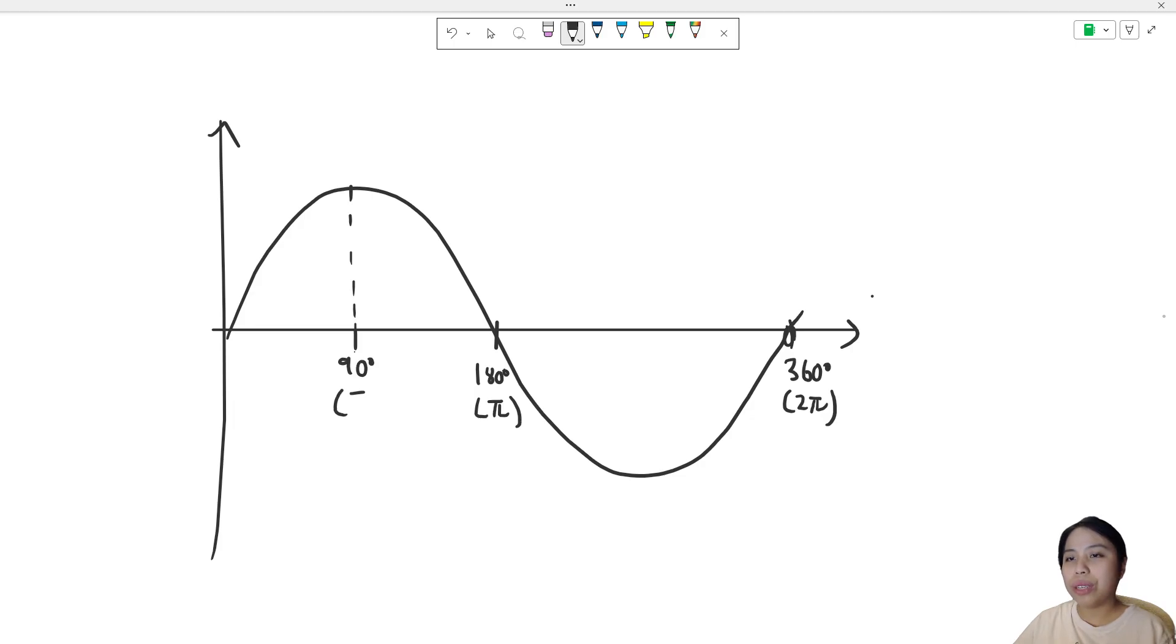And you can keep going - chop up the middle here. This one divided by half, right? 90 degrees, also known as π over 2. This one here, you can also chop it up - this will be 270 degrees, known as 3π over 4.